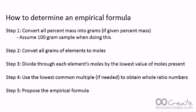Once you've done that, you may be finished or you may not. So step four, it says use the lowest common multiple in parentheses if needed to obtain whole ratio numbers. Now, the reason I put if needed is that you may get whole ratio numbers once you divide through. And if that's the case, you're ready to move on to step five and propose the empirical formula.